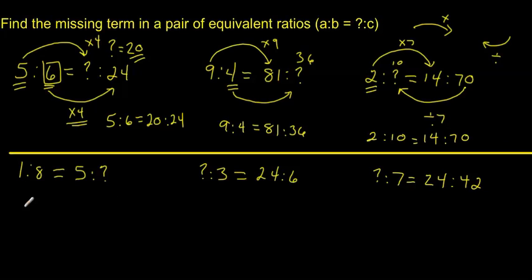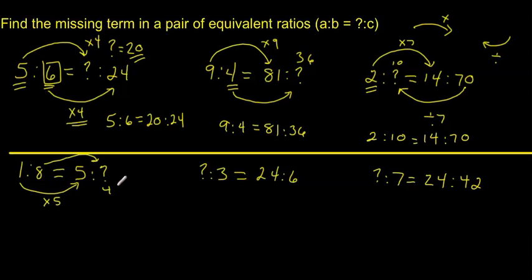We've got 1 to 8 is the same thing as 5 to something. Taking what I know, I know this 1 and this 5 — I've multiplied 1 by 5. So that means I have to multiply this 8 by 5, which is going to give me 40. So my new equivalent ratio is 1 to 8 is equal to 5 to 40.